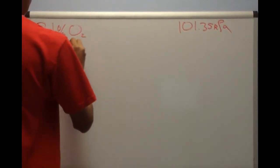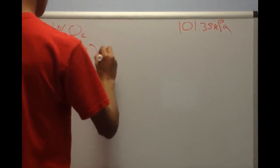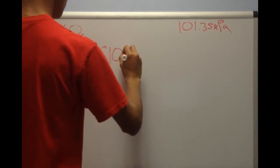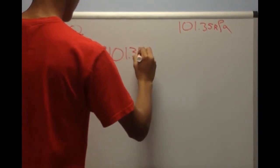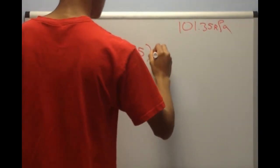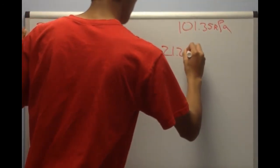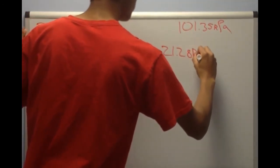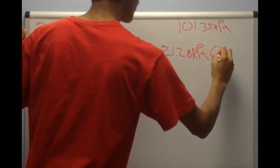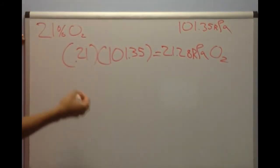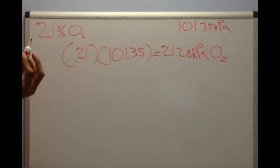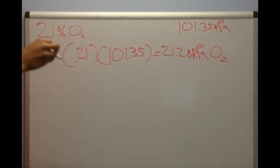So when we do this we get 0.21 times 101.35, and this value comes out to be 21.28 kPa of oxygen. Now that we know how much there is at surface level, we could do the same process to find how much there is at the peak of Everest.